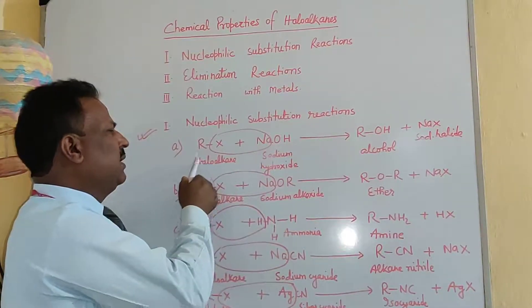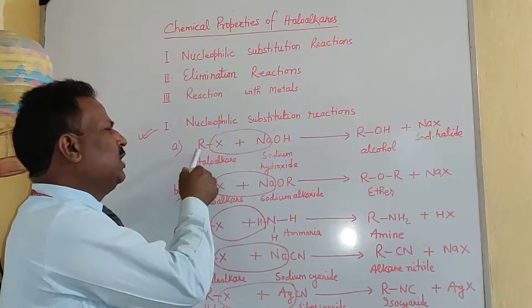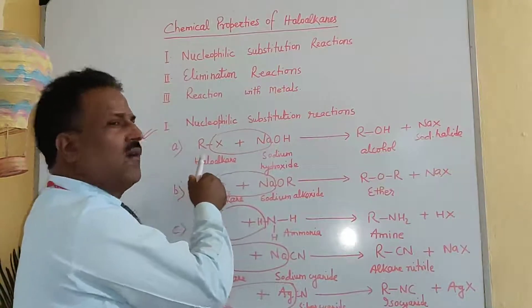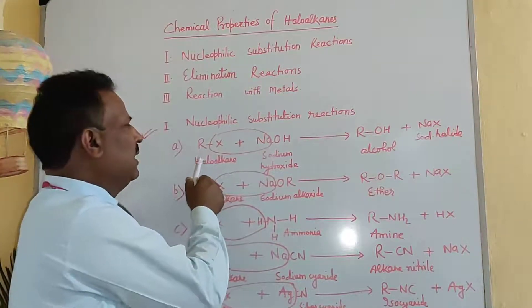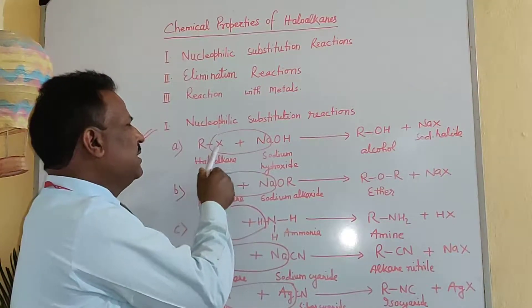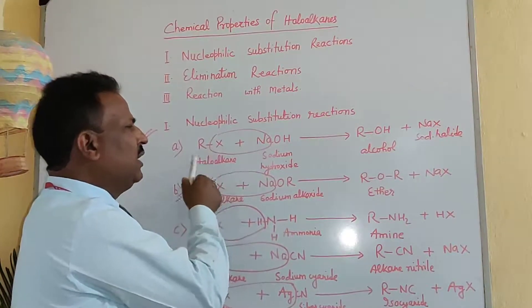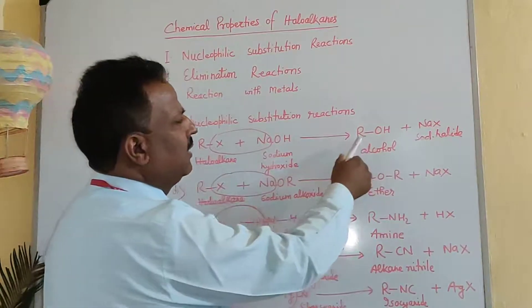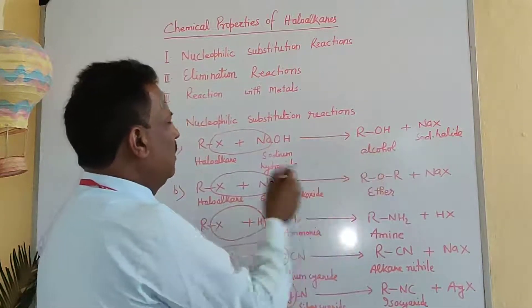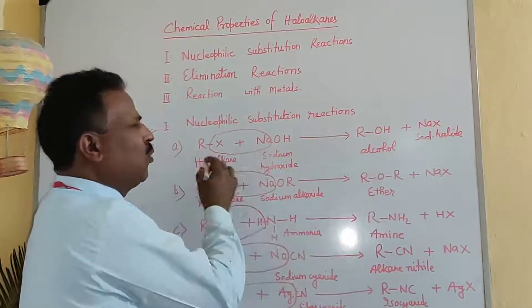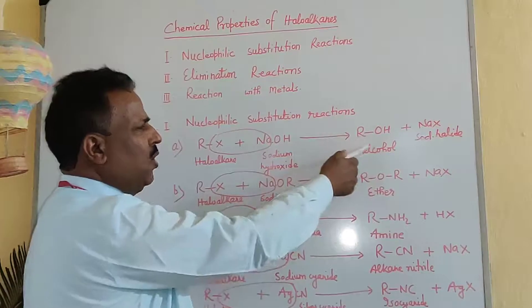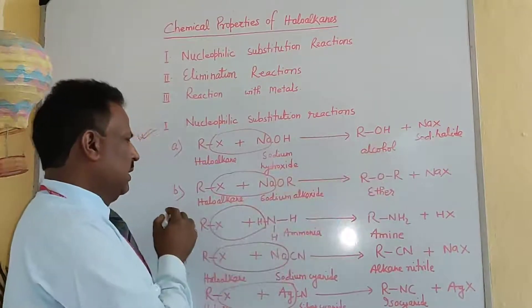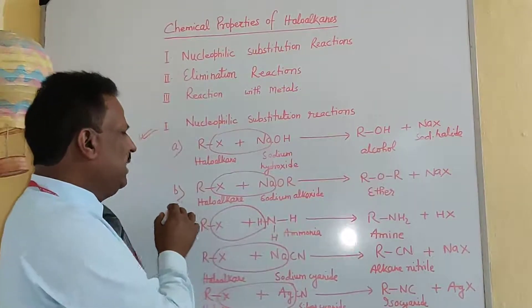If you write C₂H₅ instead of R, it is haloethane, and the product will be ethanol. Similarly, halopropane gives propanol, and so on.